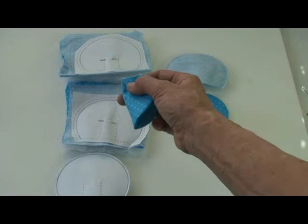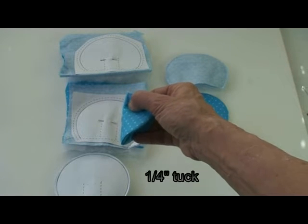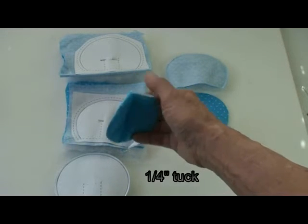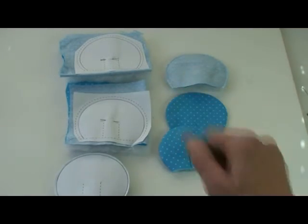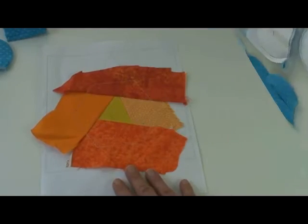Then we're just going to put a little dart—it's a quarter of an inch dart that's a half an inch long. Do that with all six petals. We'll show you what we're going to do with it.